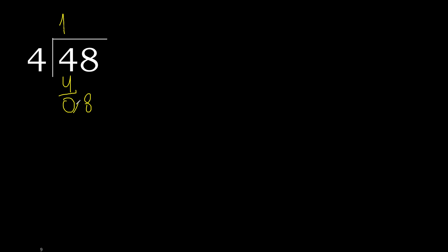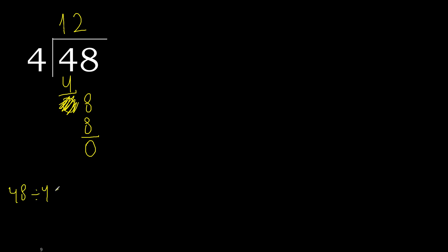Next, bring down the 8. 4 multiplied by 2 is 8 — is not greater. 8 minus 8 is 0. There is no next number, therefore we finish. 48 divided by 4 is 12.